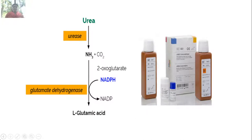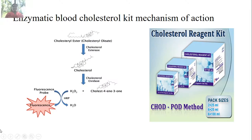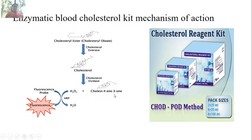A kit is available in the market for detection of urea by urease enzyme. The next analytical enzyme is cholesterol oxidase. An enzymatic blood cholesterol kit is also available in the market to estimate the amount of cholesterol present. Cholesterol esterase acts on the precursor cholesterol ester, converting it into cholesterol.